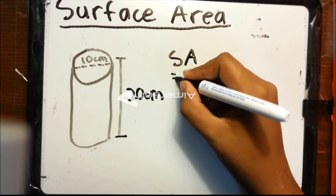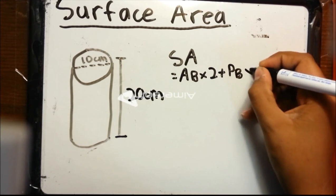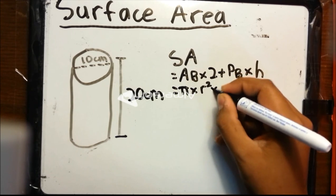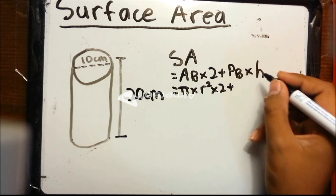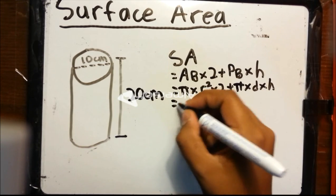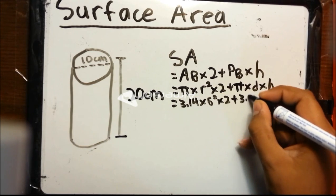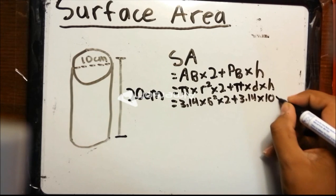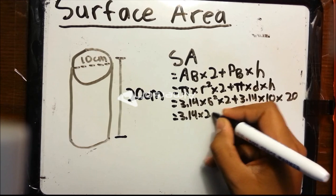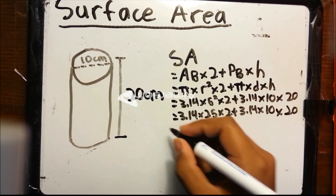Surface area for any prism equals area of base times 2, plus the perimeter of the base times height. The area of base is pi times r squared, multiplied by 2, plus pi times the diameter, which is the formula for the perimeter of the base, times height. This equals 3.14 times 5 squared times 2, plus 3.14 times 10 times 20.